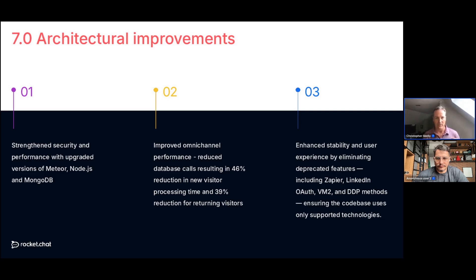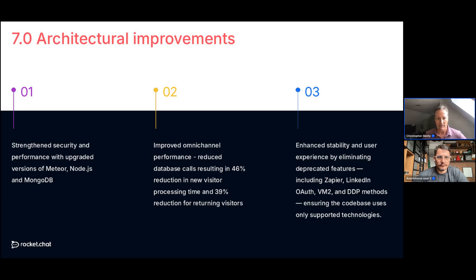On architecture, we've strengthened security and performance with key updates: upgrading to Meteor 3, moving to Node.js 20, and continuing to roll newer MongoDB versions into support while retiring older ones. These are foundational improvements that ensure the platform runs on supported, secure technologies.